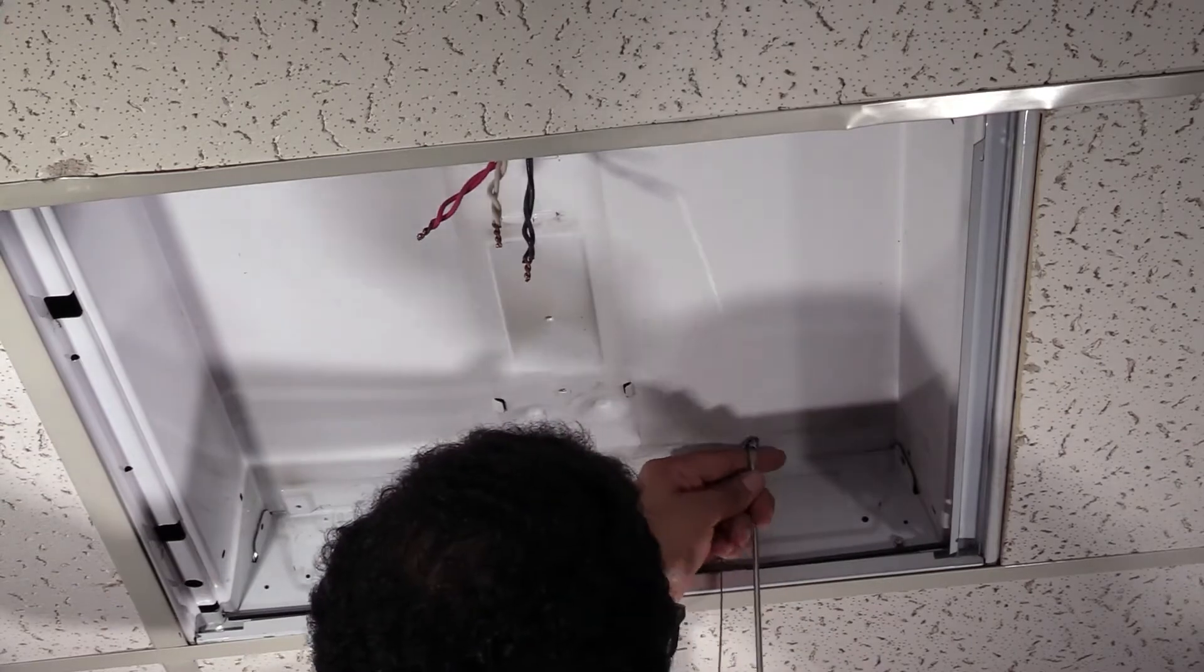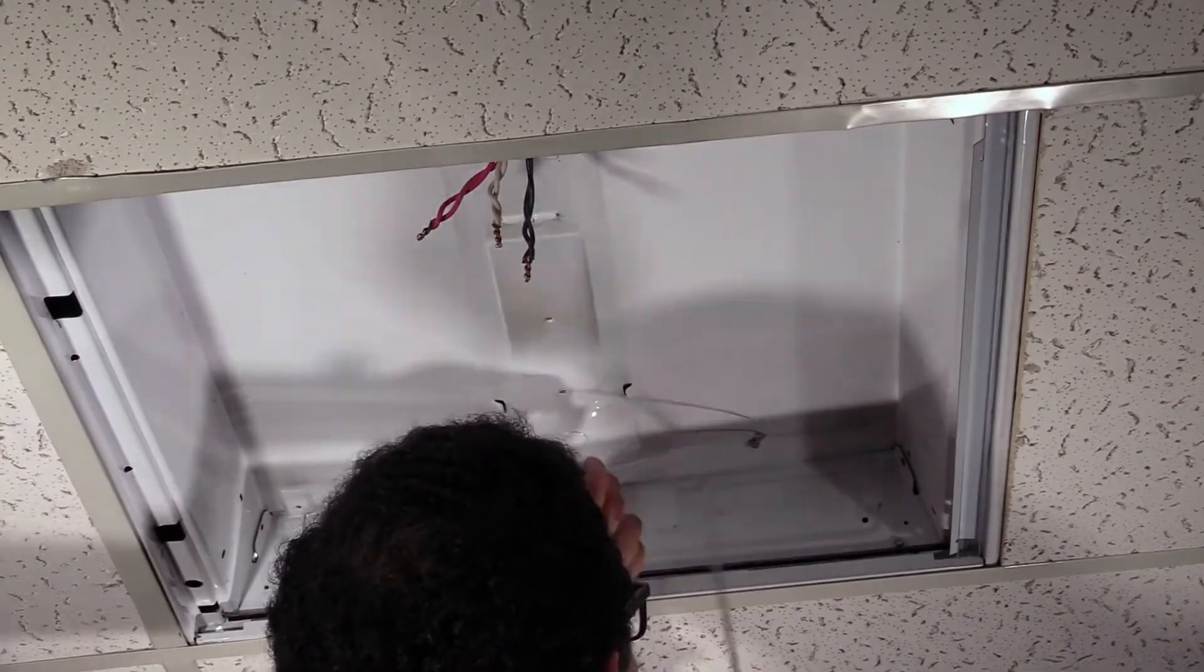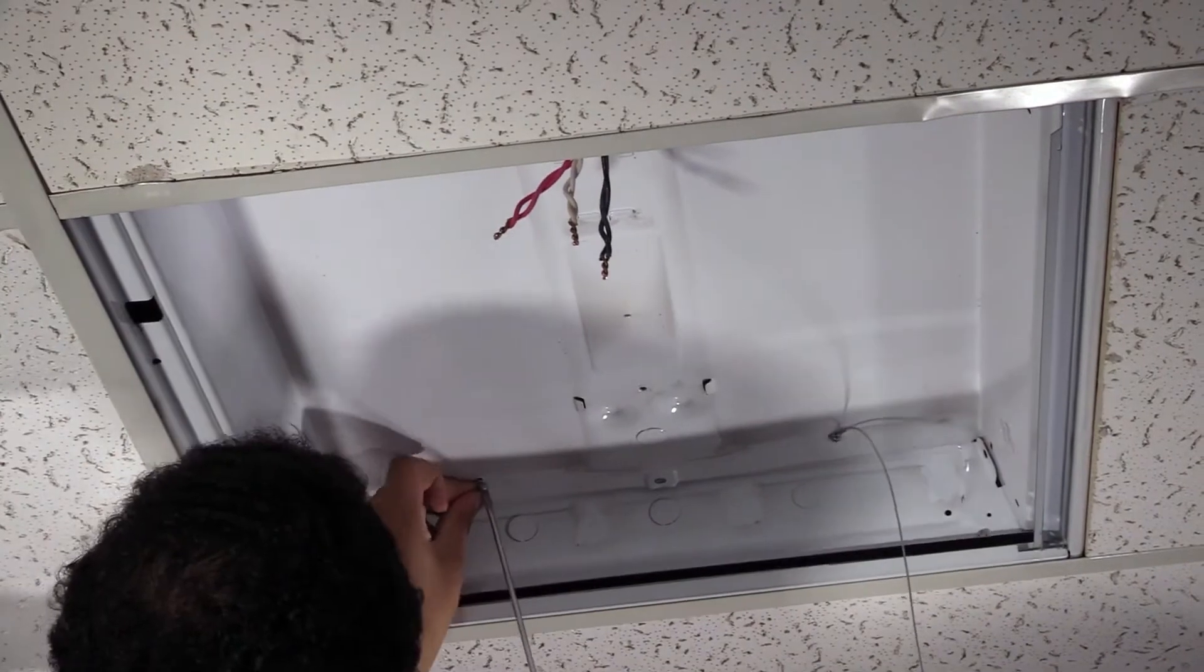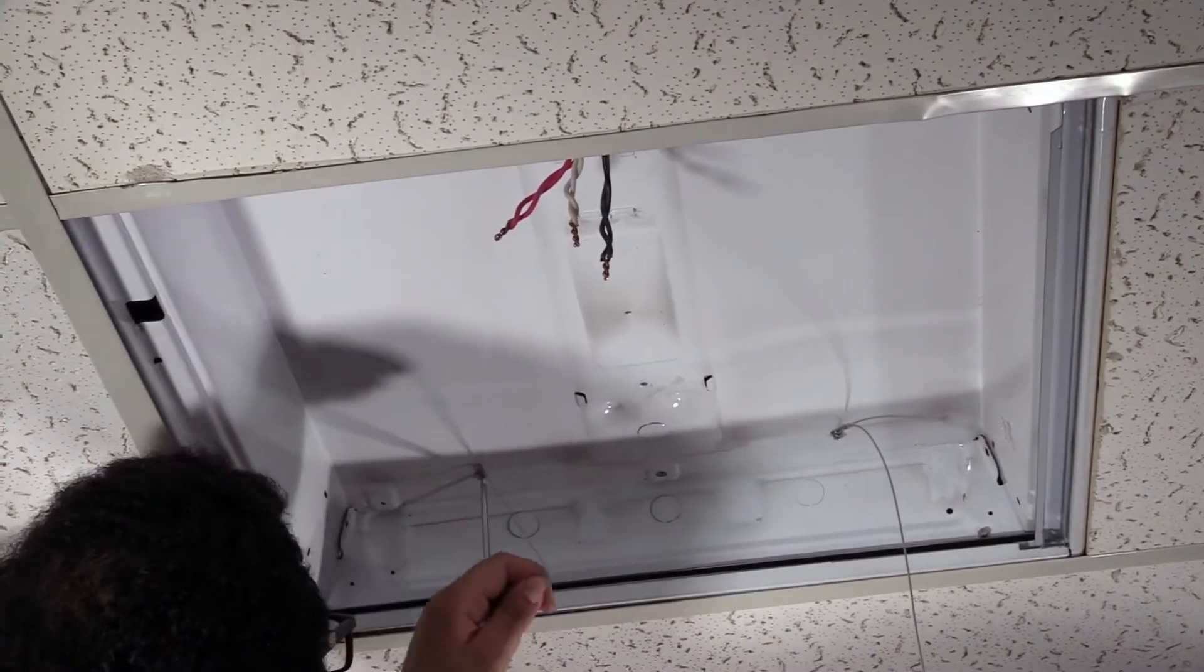Next we'll attach the included safety cables to the troffer. These will prevent the retrofit kit from falling as well as making it easier to do the wiring during installation.